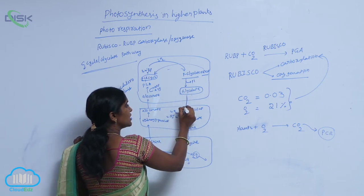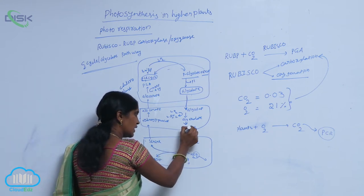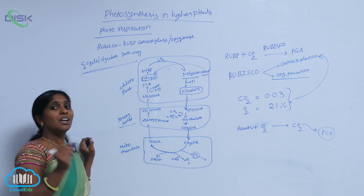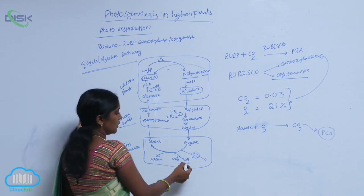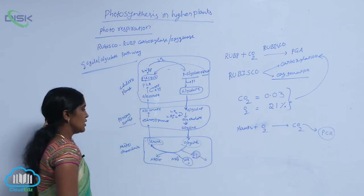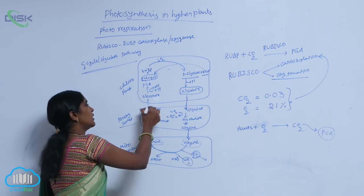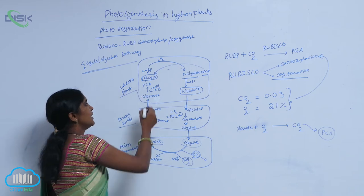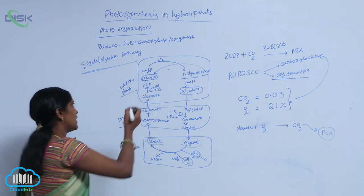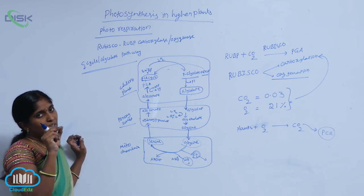The formed glycolate is translocated into the peroxisomes, where it turns into glycine. The glycine then enters the mitochondria, where the major reactions — decarboxylation and deamination — are carried out, resulting in the production of serine from glycine. The produced serine re-enters the peroxisome, where it turns into glycerate. The glycerate then enters the chloroplast, where it is involved in the production of PGA (phosphoglyceric acid), the first intermediate compound for the C3 cycle, from which the C3 cycle is carried out.